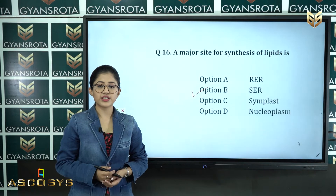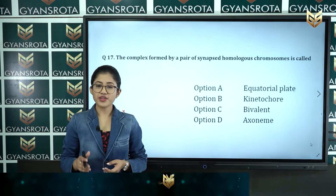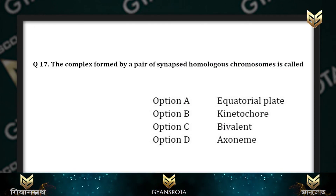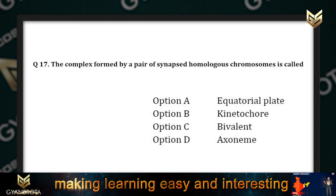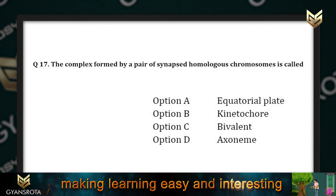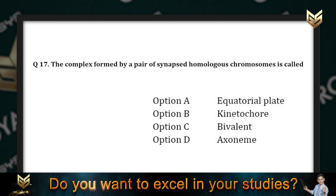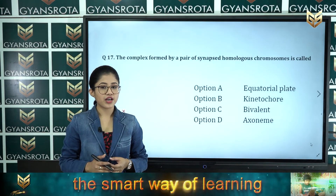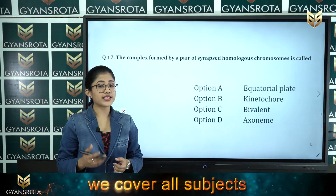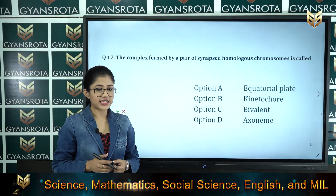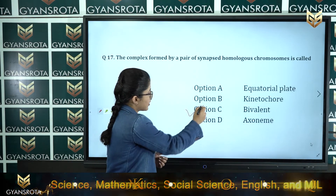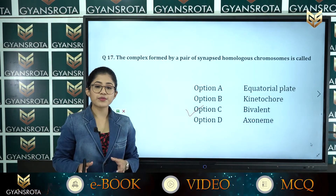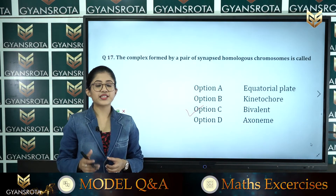Question number seventeen: the complex formed by a pair of synapsed homologous chromosomes is called — option A: equatorial plate, option B: netecore, option C: bivalent, option D: axoneme. This is from the chapter cell cycle and cell division. The correct answer is option C — bivalent is the complex formed by a pair of synapsed homologous chromosomes.